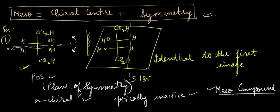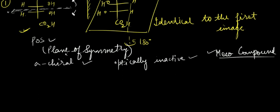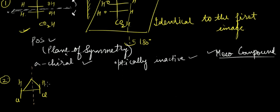It is a meso compound because it has a chiral center, symmetry, and is optically inactive due to internal compensation. Looking at the second example with HCl groups, you can clearly see it has a plane of symmetry, making it a meso compound by symmetry plus chiral center.